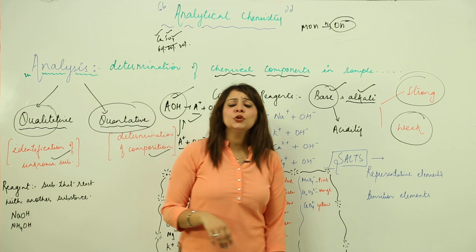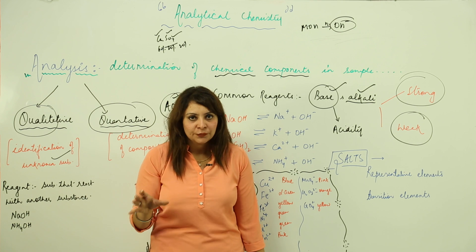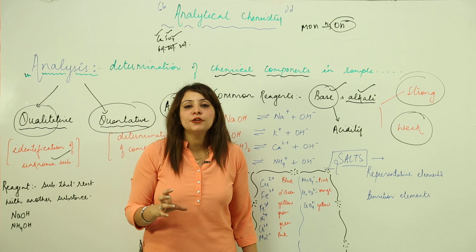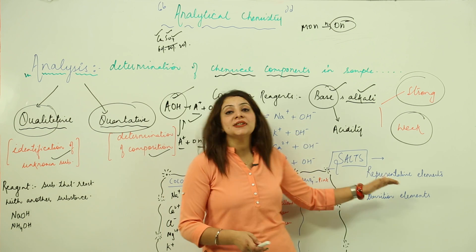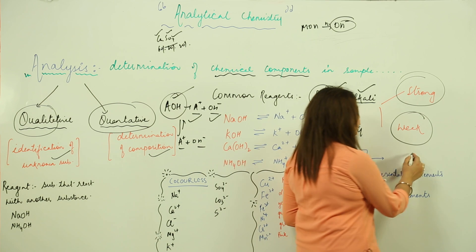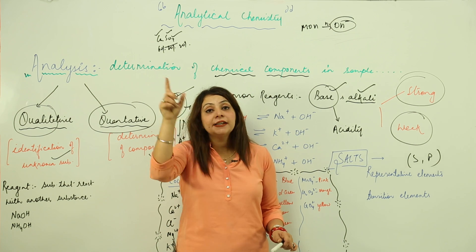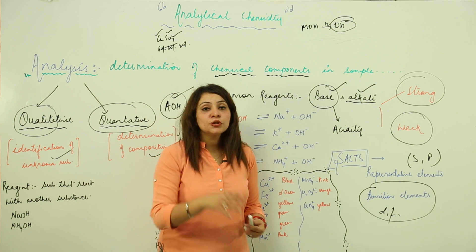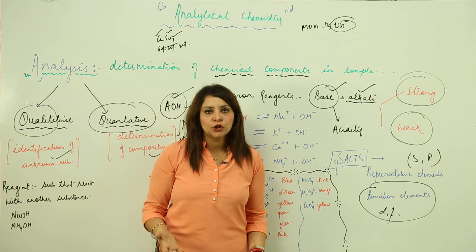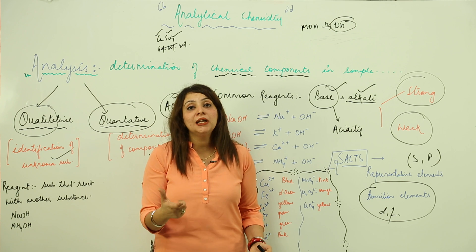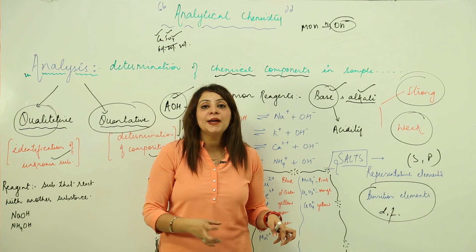Moving on to salts: when an acidic and a basic substance react with each other, they form a neutral substance — that is the salt. Salt is formed as a result of a neutralization reaction between an acid and a base. Regarding the colors of salts, all the representative elements — those falling under the S and P block — their salts are almost colorless. We identify substances by their colors because we cannot see ions floating in solution; we confirm them by the colors produced.